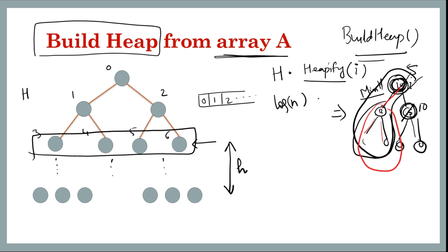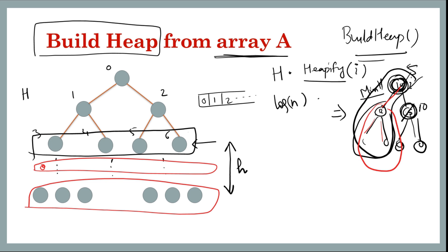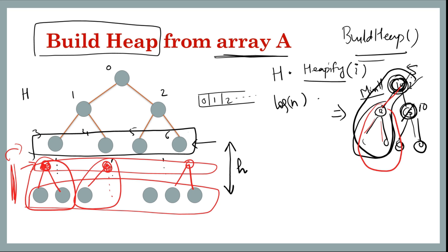To build a heap, we put all the nodes in an array — which is already the case — then call heapify on nodes. The leaf nodes are already heaps, so we can start from the second-last level. For each node at the second-last level, we call heapify, making that subtree a heap. Then we move to the third-last level and so on, going bottom-up until we finally reach the root node.